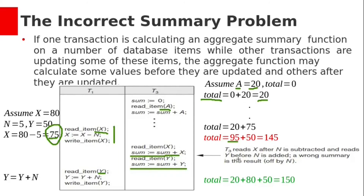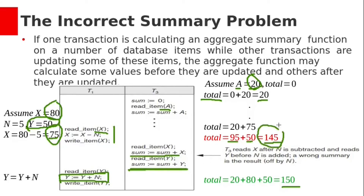Suppose Y equals 50, so 50 is added, giving a final total of 145. But the 5 seats transferred from flight F1 were not yet added to flight F2 when T3 read Y. If these transactions were executed serially, the total would be 80 plus 20 plus 50 equals 150, or after the transfer: 75 plus 25 plus 50 equals 150. Because T3 read Y before the update, we got the incorrect value of 145. This is the incorrect summary problem.